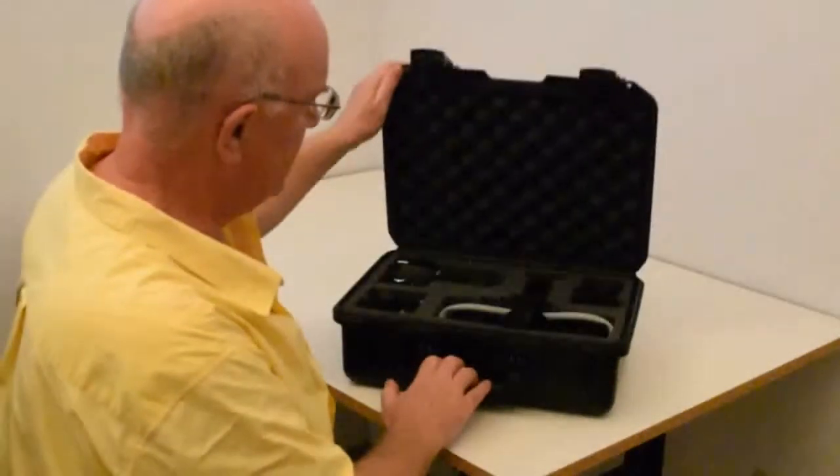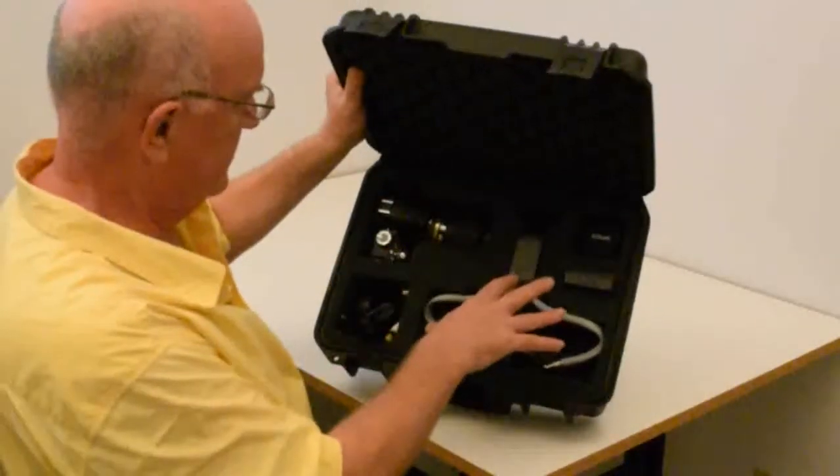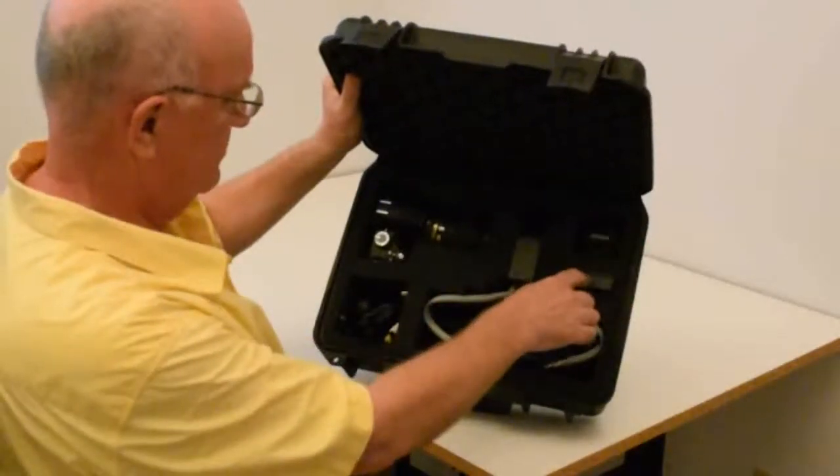You can see the contents here: the camera, the illuminator, spare lens, camera battery charger, and some accessories.